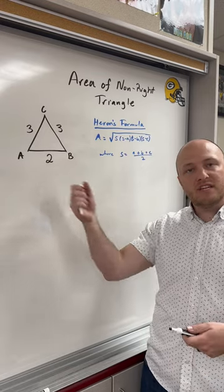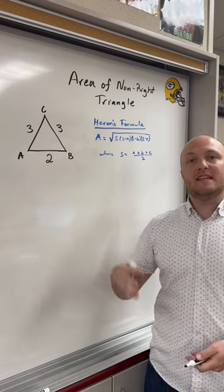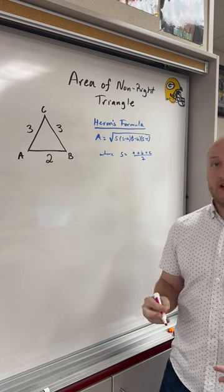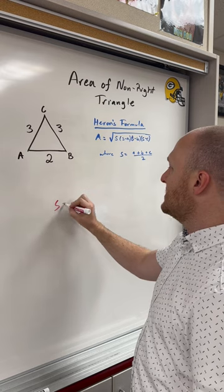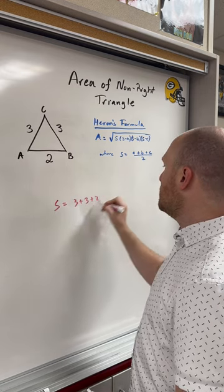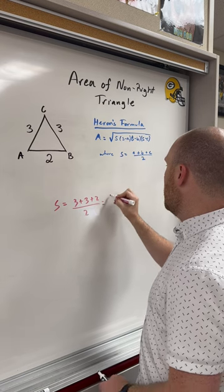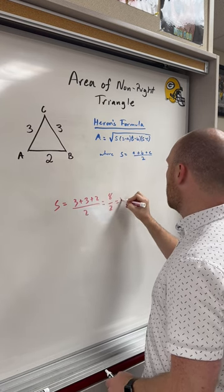Let's go ahead and calculate the area of this non-right triangle utilizing Heron's formula. First, we need to go ahead and find S, which is the summation of all of the sides added together, divided by 2. Thus, we get 4 for S.